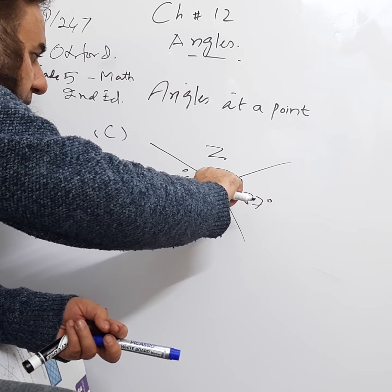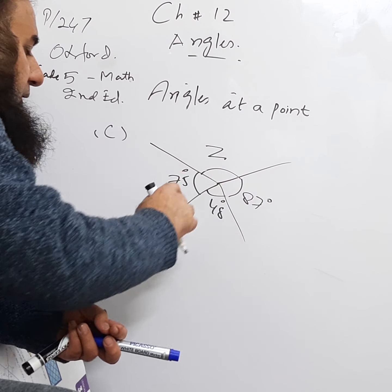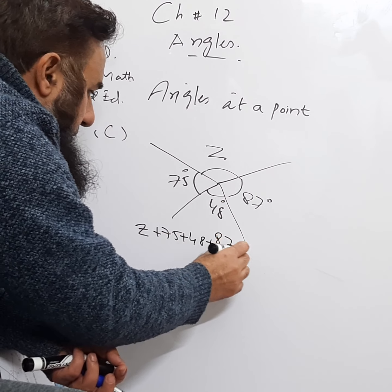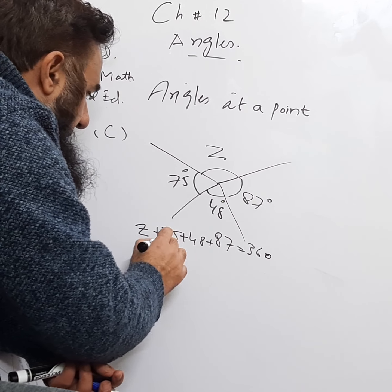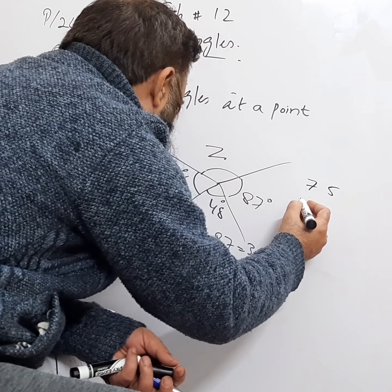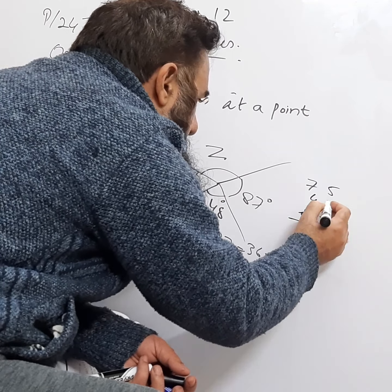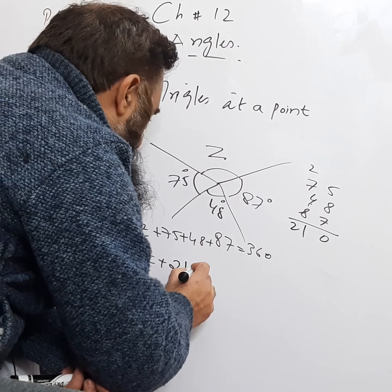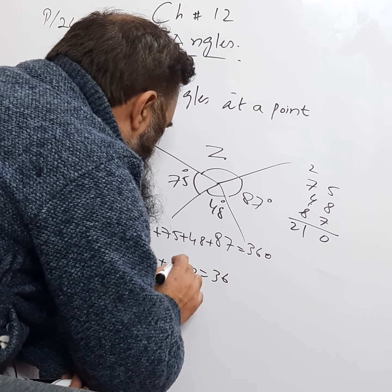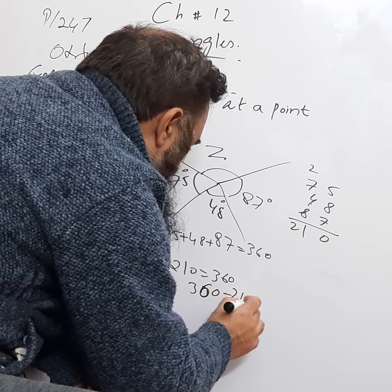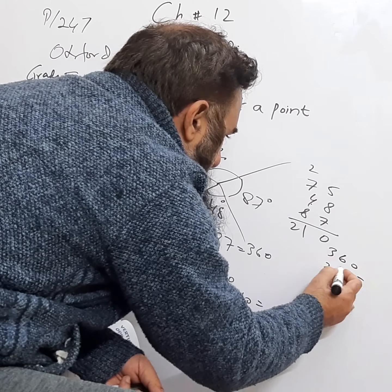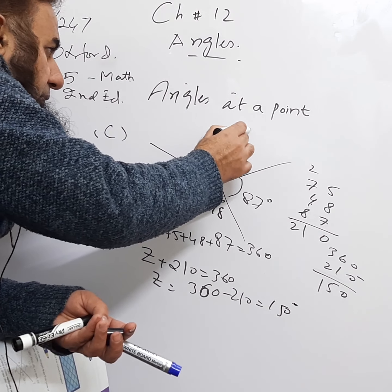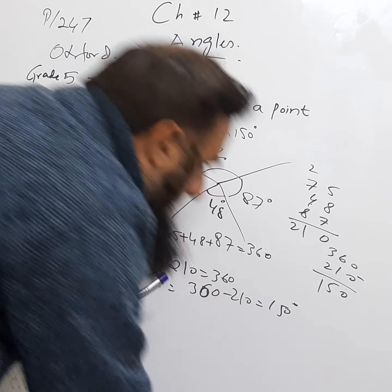It forms a complete circle — starting from one point and going all the way around. So z plus 75 plus 48 plus 87 equals 360. Adding 75, 48, and 87 gives 210. So z equals 360 minus 210, which equals 150. Therefore z is 150.